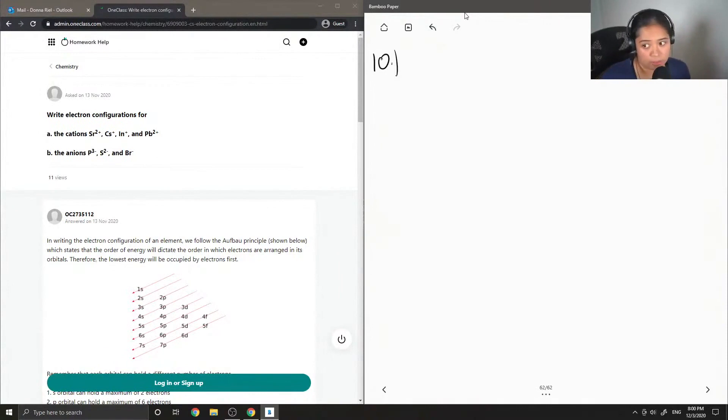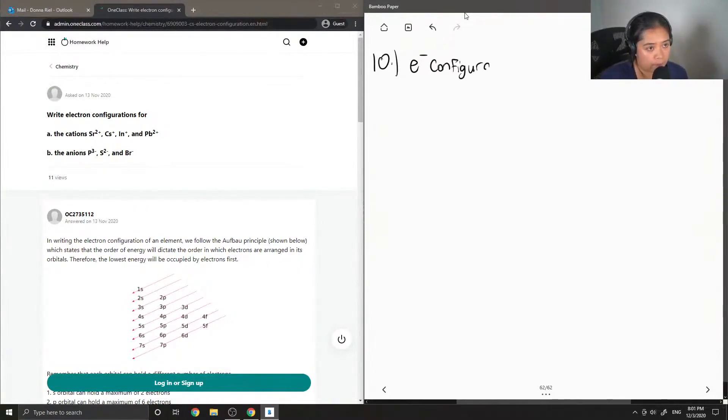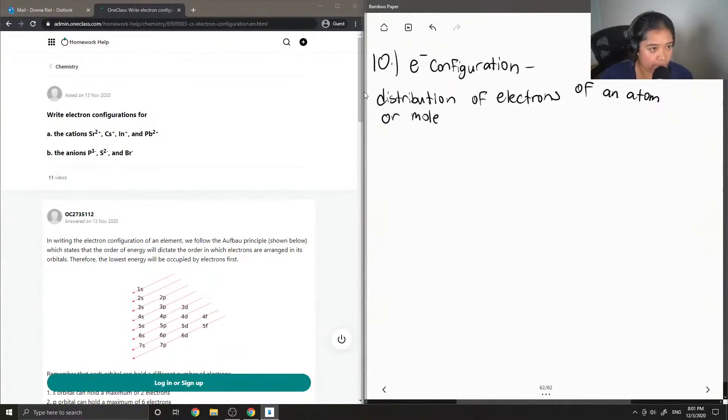So, it just asks to write electron configurations for the following cations and anions. First I'll just write out the definition of electron configuration. So electron configuration is the distribution of electrons of an atom or molecule in atomic or molecular orbitals.